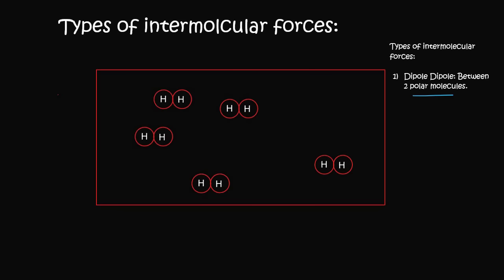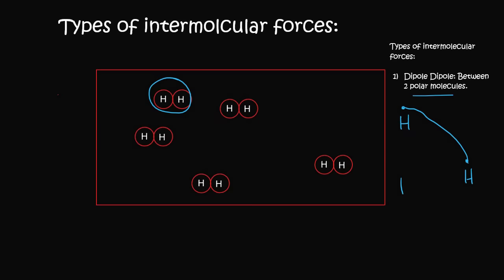Now we're going to look at the type of intermolecular force between hydrogen molecules. We zoom into the Lewis diagram: two hydrogen atoms each with one electron — they're in group one. When they bond together it's a simple connection. We look at the electronegativities: both hydrogen atoms are 2.1, so the difference is zero.